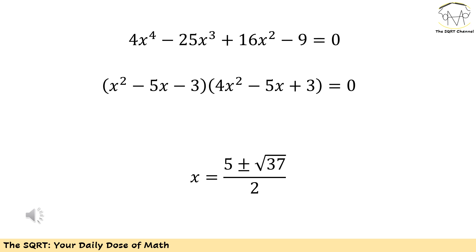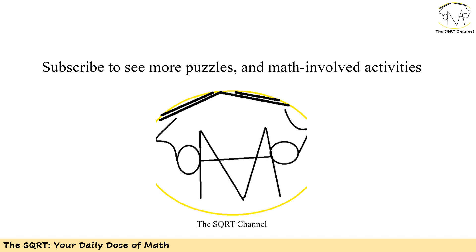From here we have two quadratic equations to solve. Removing values that are not real, the final answer is two possible values for x: x equals (5 plus or minus radical 37) divided by 2. Thanks for watching! If you'd like to see more puzzles, math olympiad problems, and competition problems, please subscribe to this channel — the security channel. I hope to see you in the next video.